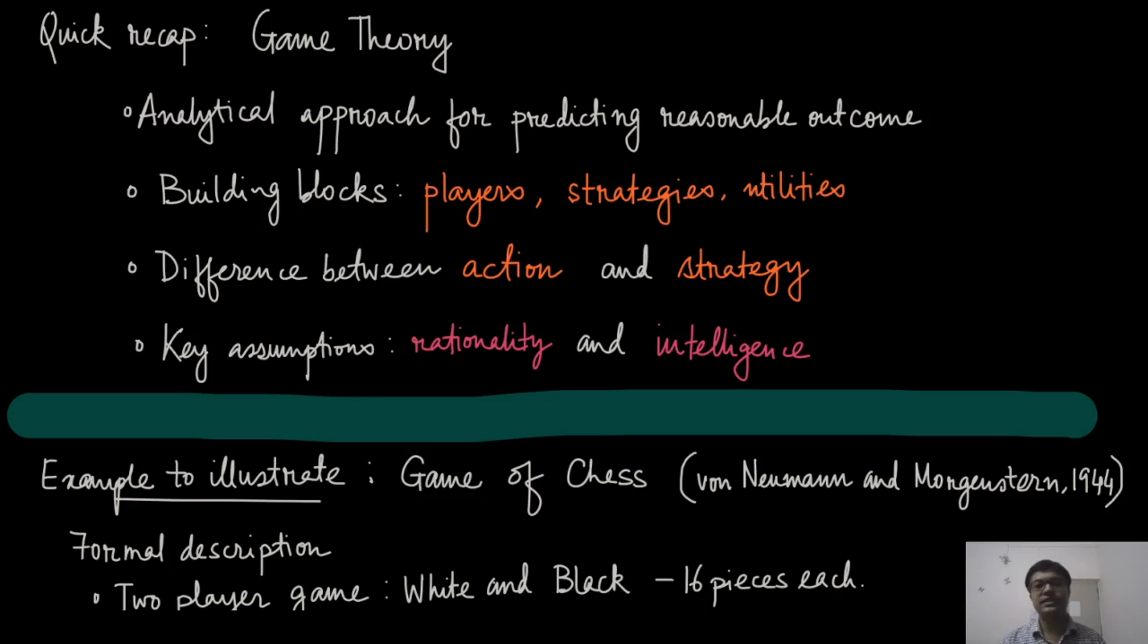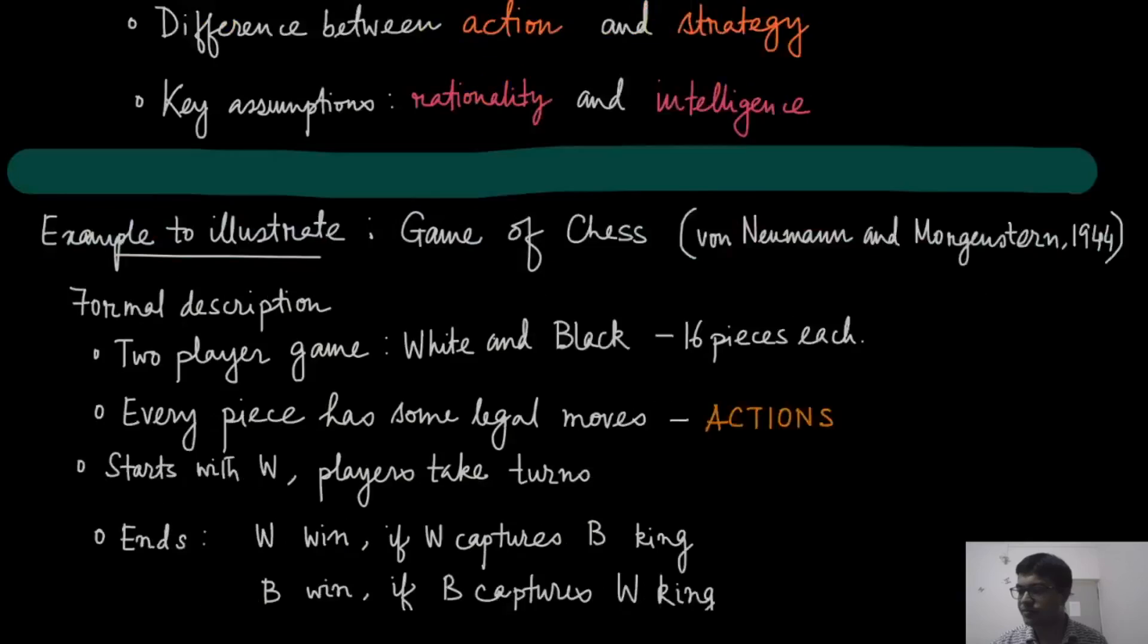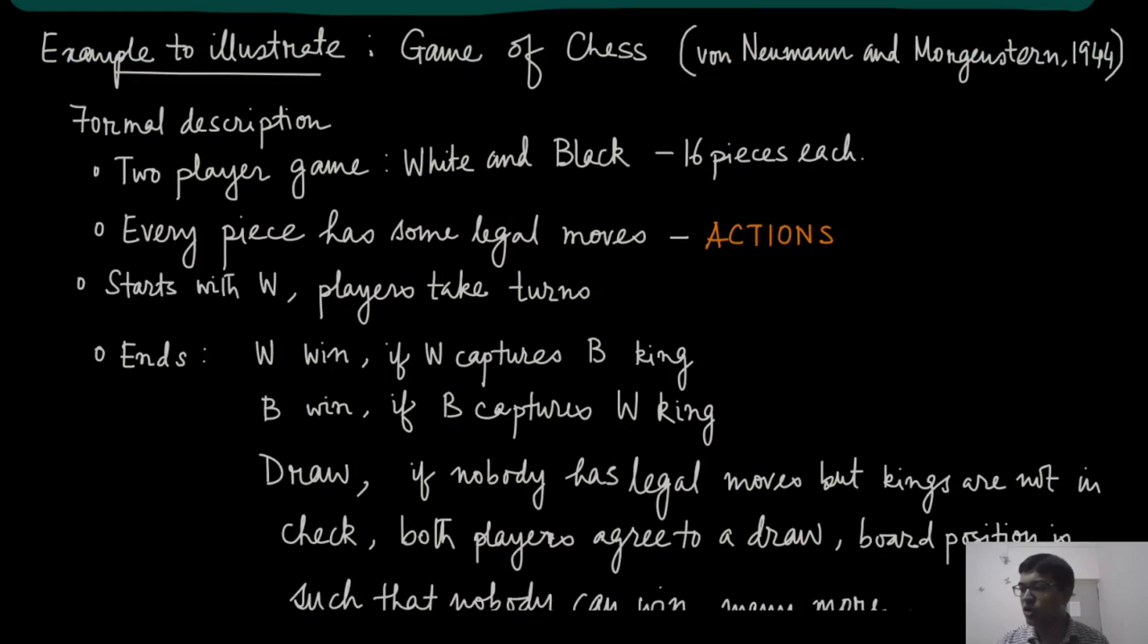To start with, let us take an example. That is the best way of explaining any idea. So this example that we are going to discuss is due to Von Neumann and Oscar Morgenstern. And this is a formal definition of Game of Chess. The purpose that we discuss this example is to see how we can actually formally say all these properties, all these building blocks of Game Theory. So let us get started. I am sure that you all know what the game of chess is. But this description is to make it more formal so that we all can refer to the terminologies in the same way.